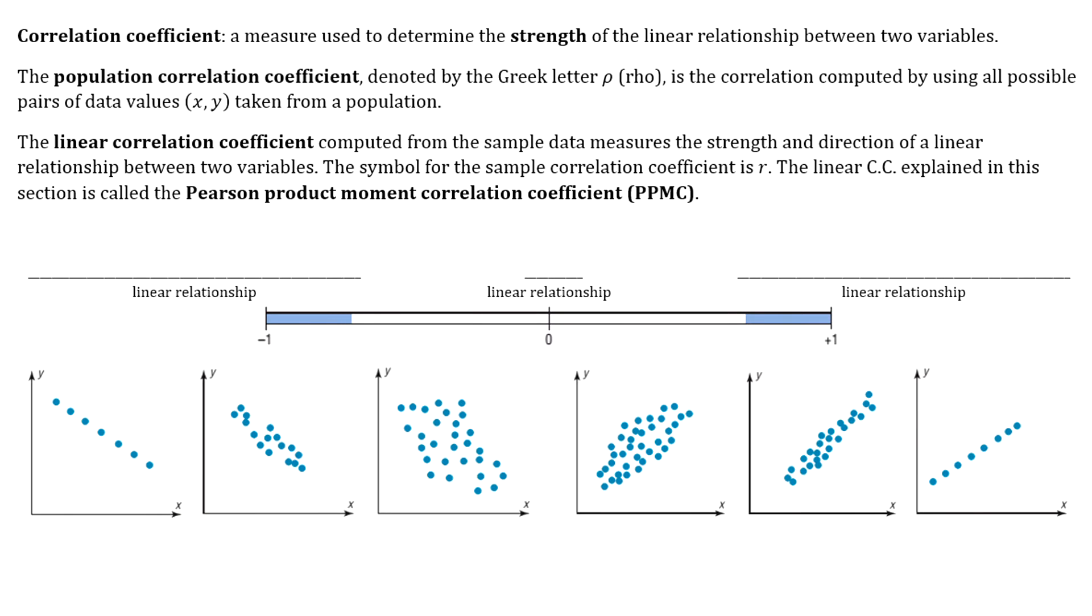So once you've done your scatterplot and you've determined that there looks like there is some sort of linear relationship between your variables, the next thing you want to do is figure out the strength of that linear relationship. To do that, we're going to calculate what's called the correlation coefficient, and that's going to be a measurement that determines the strength of the relationship.